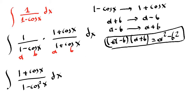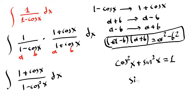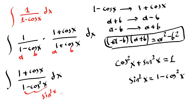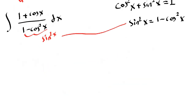Using the Pythagorean identity — cosine squared of x plus sine squared of x equals 1 — if you solve for sine squared of x, you obtain 1 minus cosine squared of x. So we can replace the denominator with sine squared of x. Now we have the integral of 1 plus cosine of x over sine squared of x.